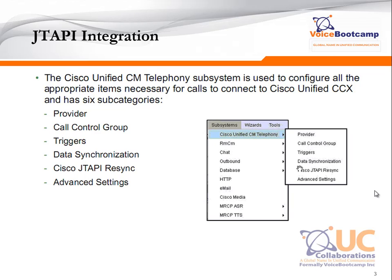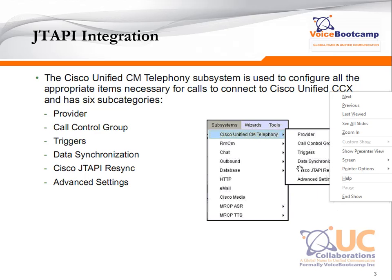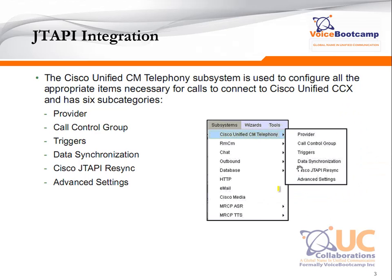One of the most important subsystems that we need to focus on is called the JTAPI integrations, or Cisco Unified CM Telephony. This subsystem can be accessed by going to the subsystem menu and then selecting CM Telephony. This is where you provide the information of your call manager, such as a provider, and call control group — these are the CTI ports that you need to create that will carry the communication between the call manager and the Contact Center Express.